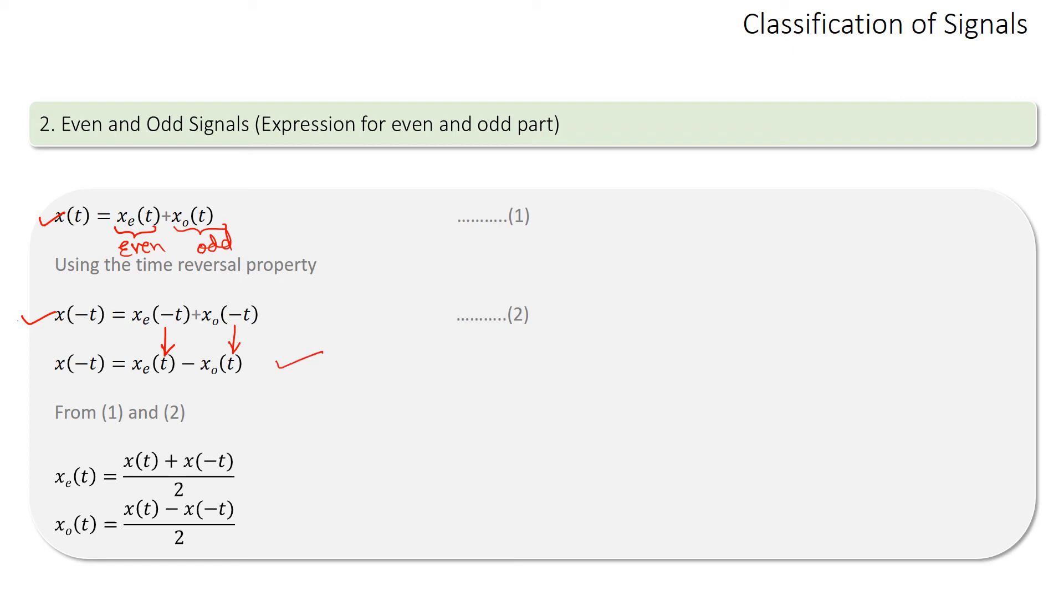Hence we can rewrite this expression, and from equations 1 and 2 we can compute the expression for even and odd parts of any arbitrary signal x(t). The formulas are: xe(t) equals [x(t) + x(-t)]/2 and xo(t) equals [x(t) - x(-t)]/2.